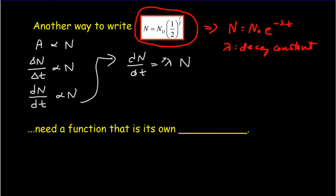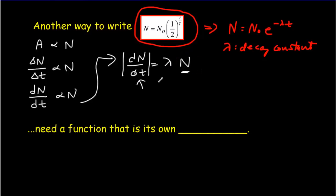Properly expressed, we should put a negative sign here, since the number of particles is always decreasing. I prefer to use an absolute value sign to say that the magnitude of the rate of decay equals a constant — the decay constant — times the number of particles. So this is really a function N that looks the same way in its derivative. What function is its own derivative? Of course, it's e to the x.